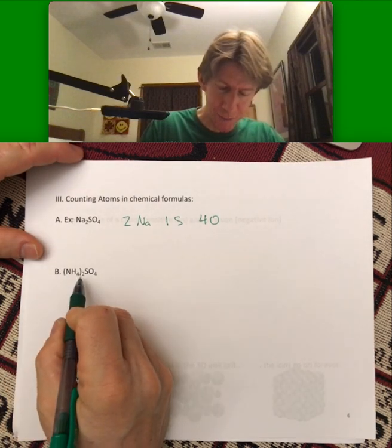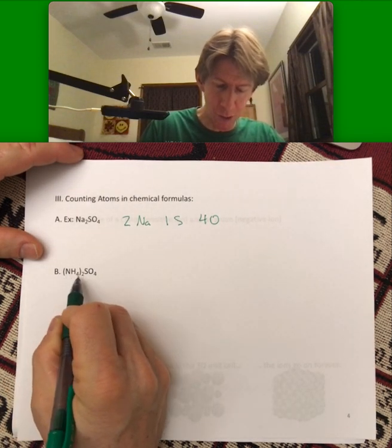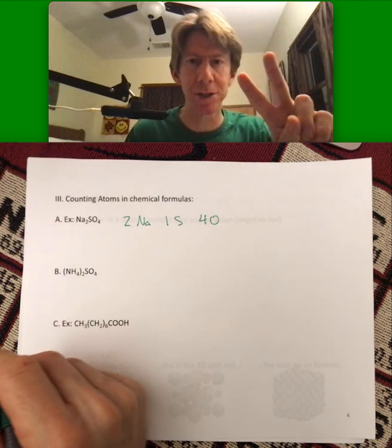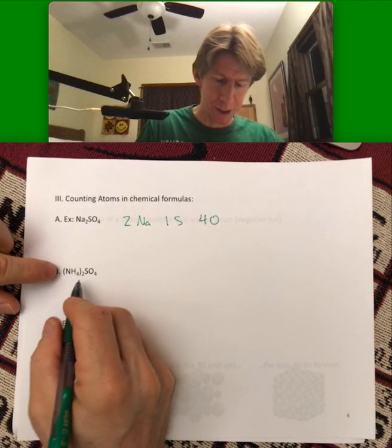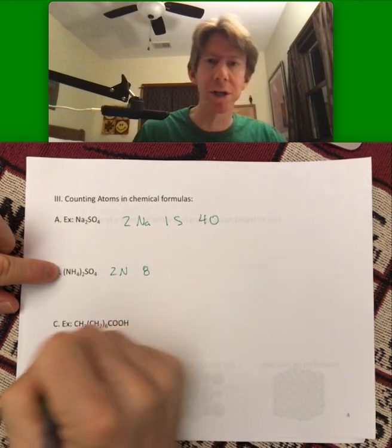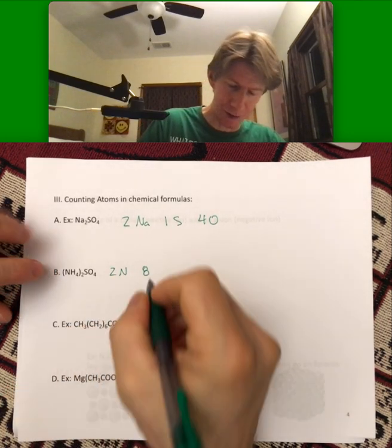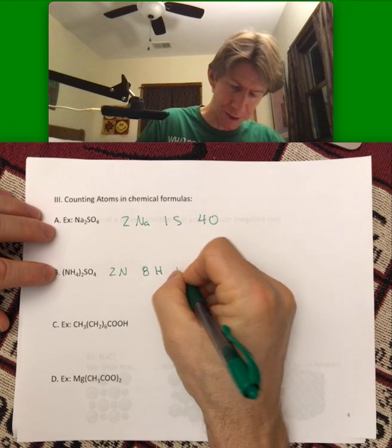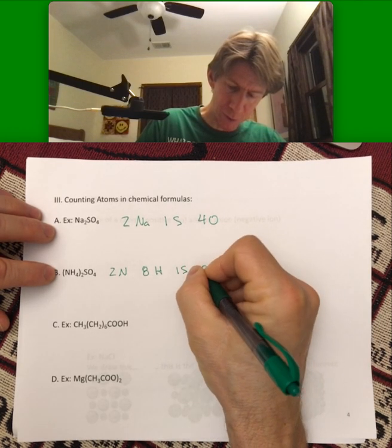Just reviewing, though, two means that the whole thing in parentheses, there are two of. So there are two nitrogens. There are four times two or eight hydrogens, one sulfur, and four oxygens.